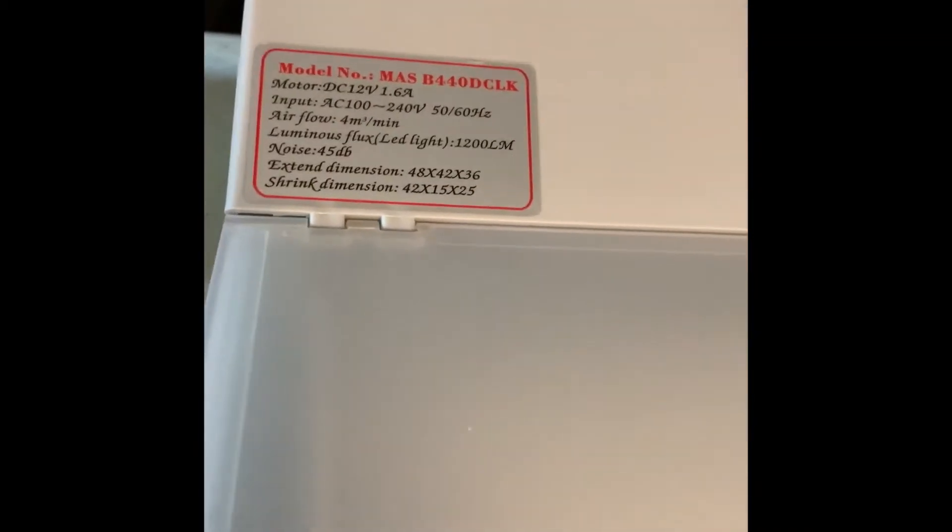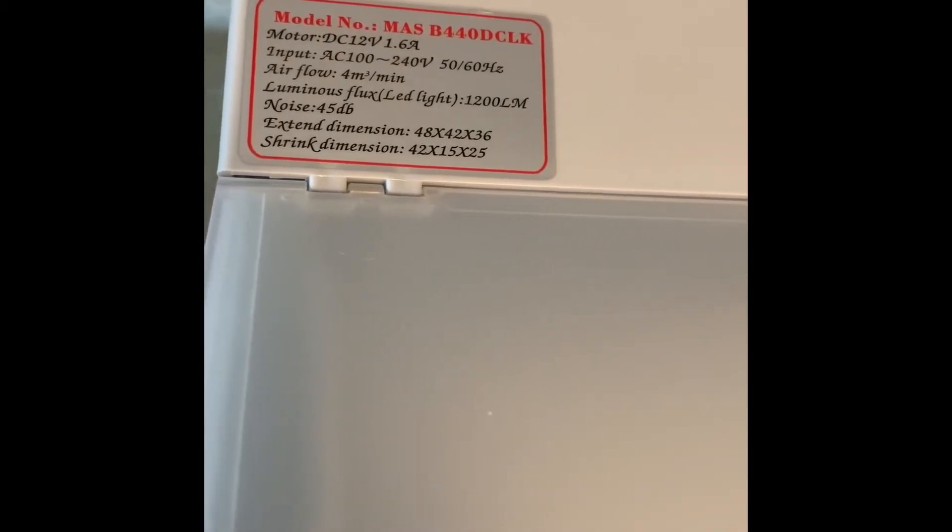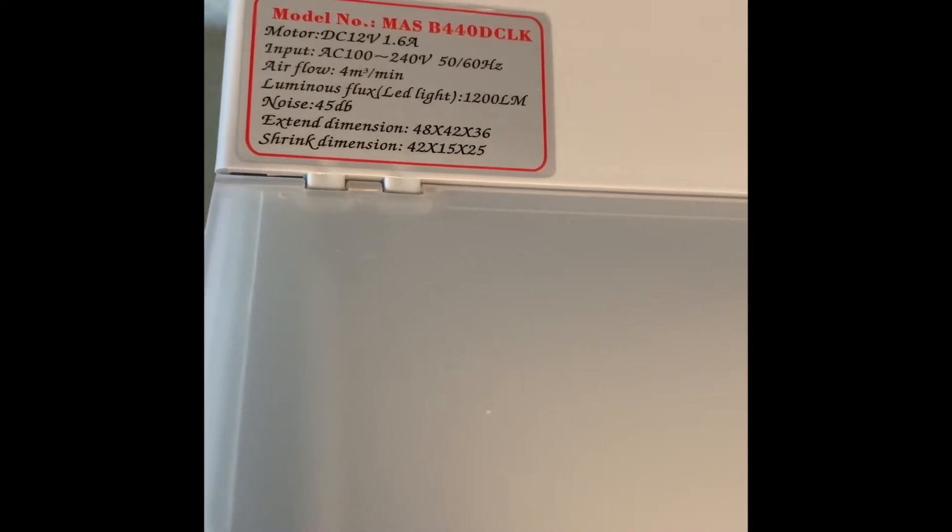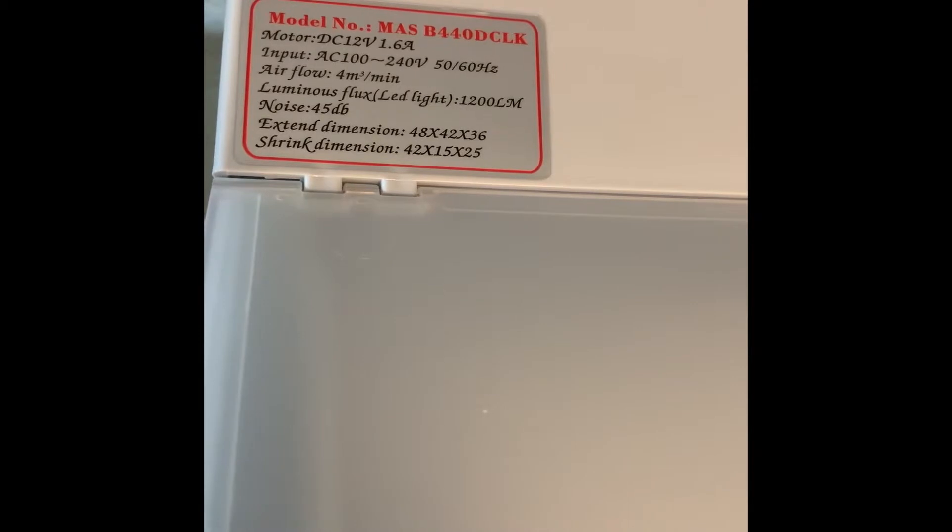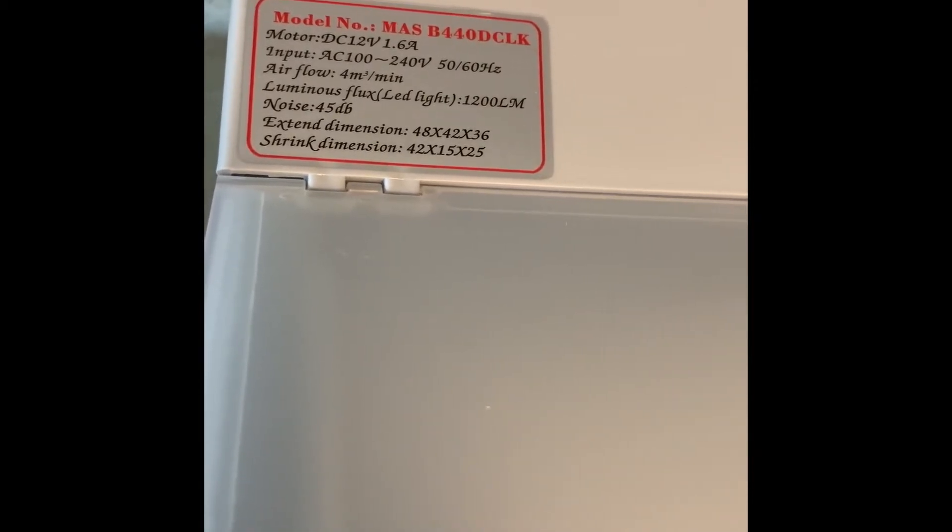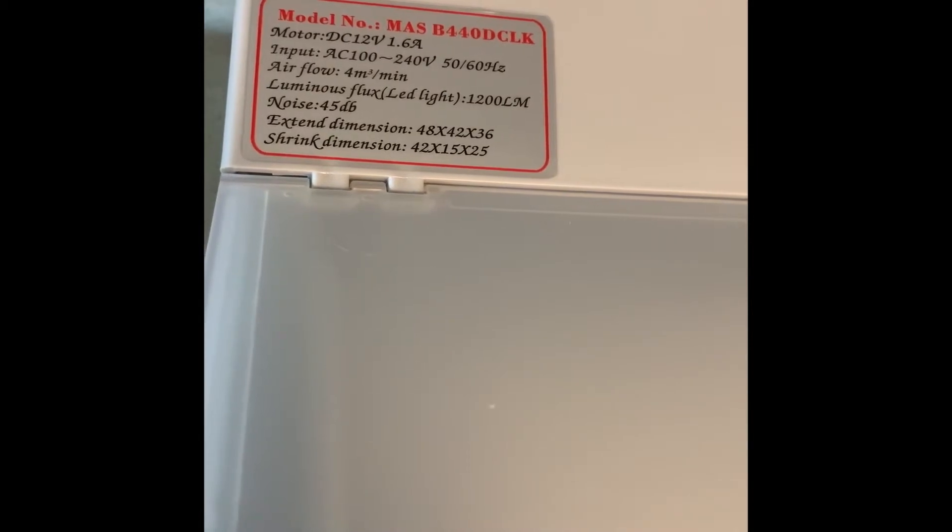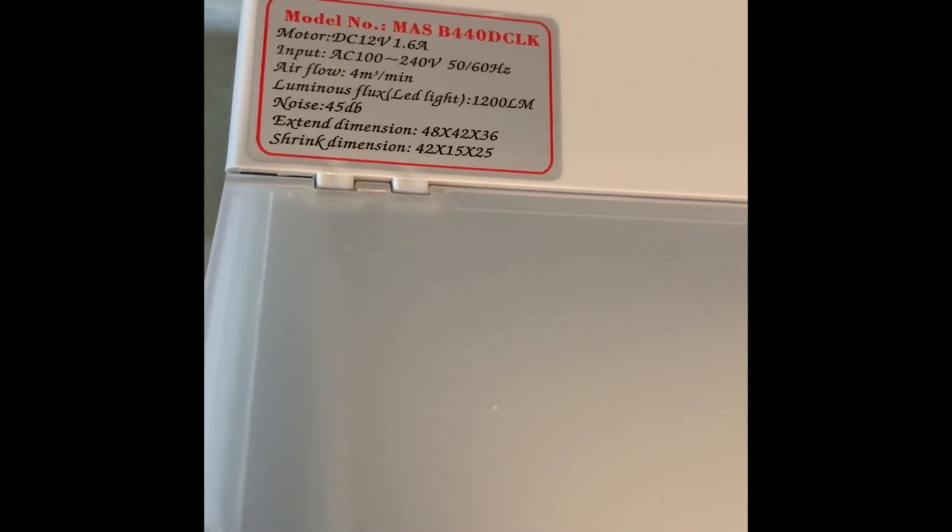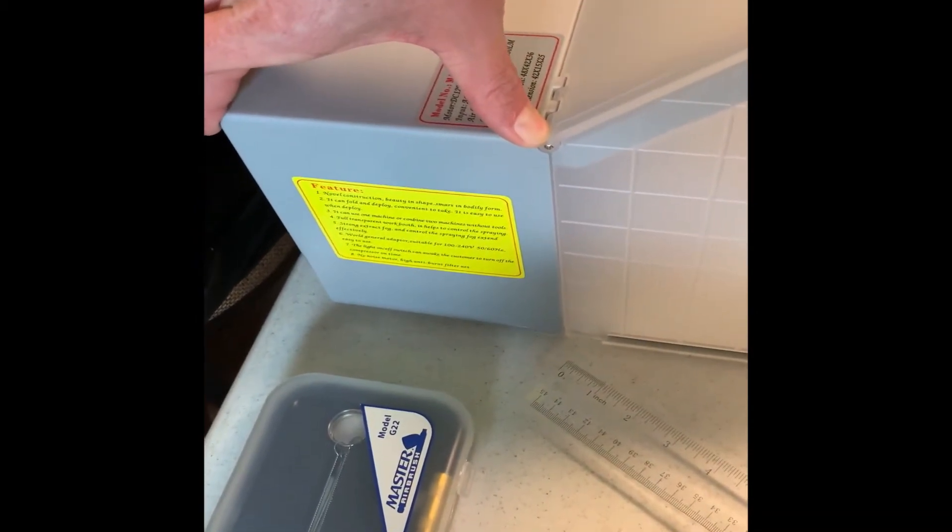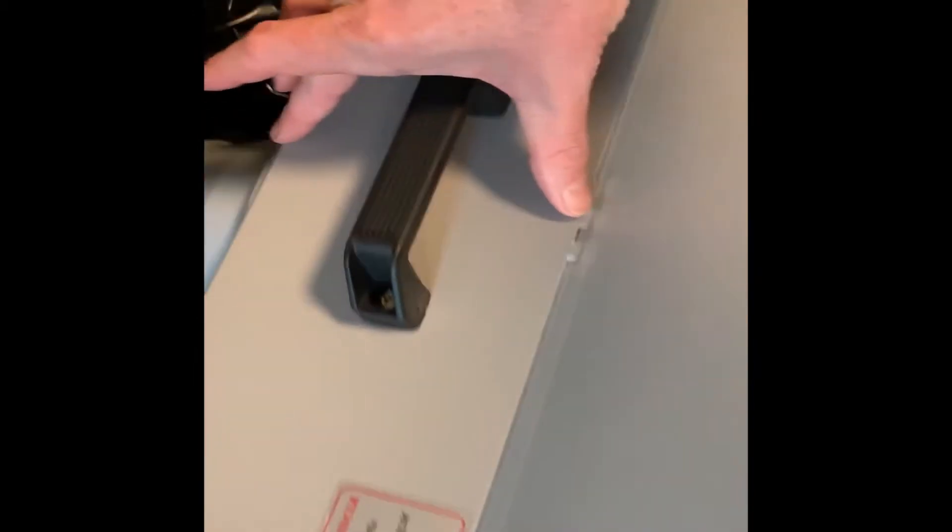So here's the model number on this one. You can see all of that. It shows you the cubic meters per minute and all that. 25 decibel noise. And it shows you the dimensions there. Now those dimensions there are going to show you the full expanded version all the way to the back.